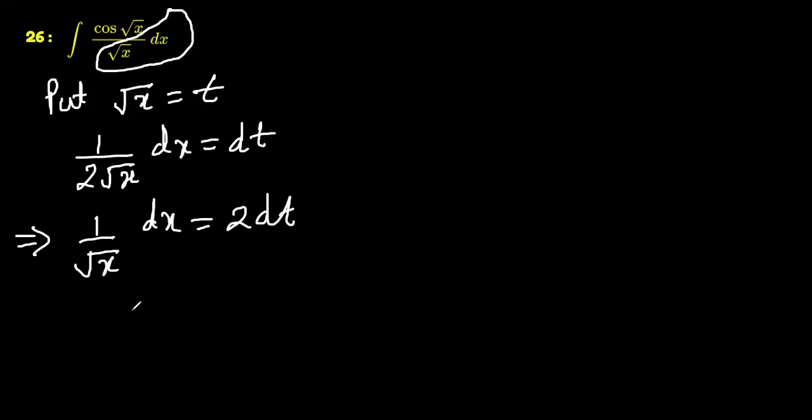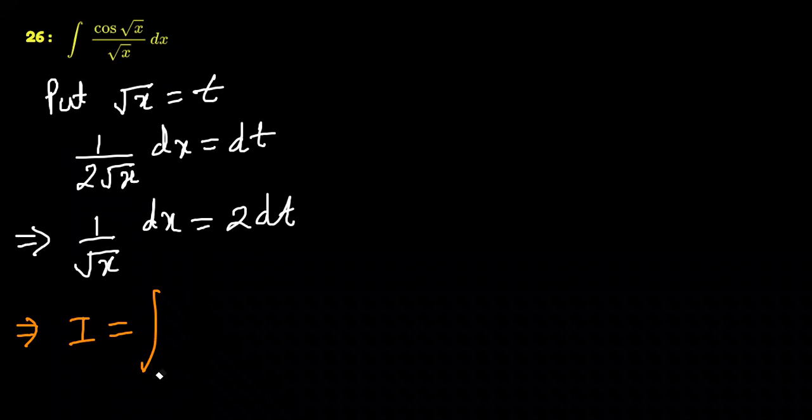Look how our question is transformed now. Our question now looks like, let me write I equals the integration of - in place of dx by root x, we are going to write 2 dt and cos t. That's cos t times 2 dt.